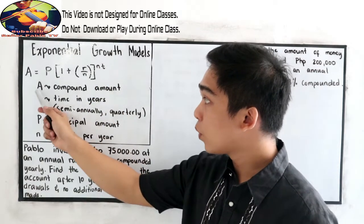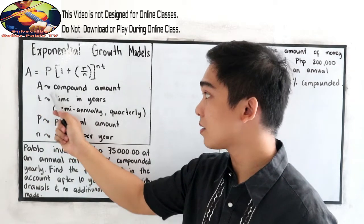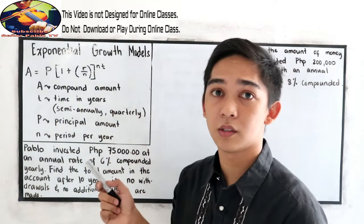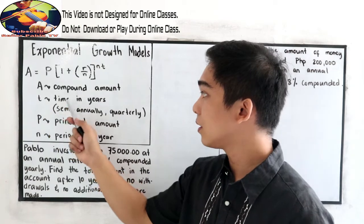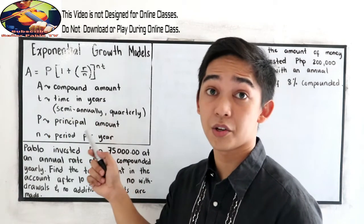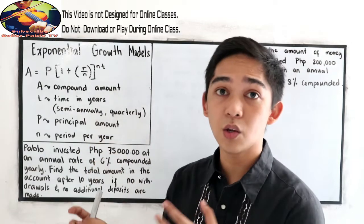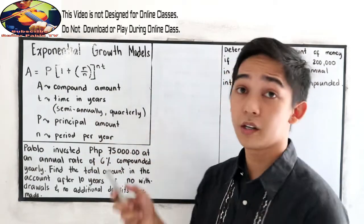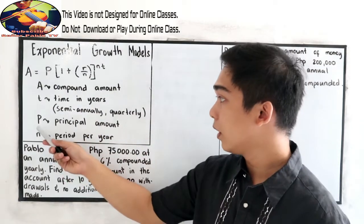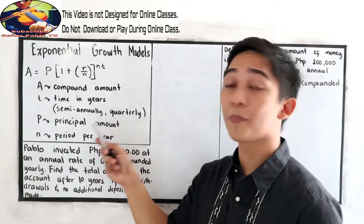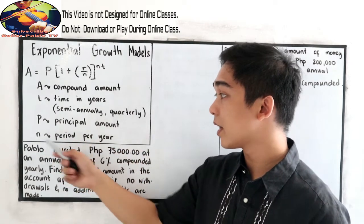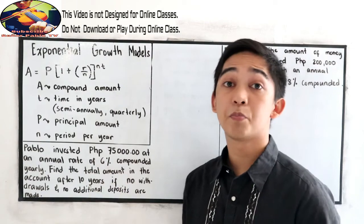Where A is the compound amount, T is the time in years, we encounter semi-annually or quarterly, P is our principal amount, and N is the period per year.